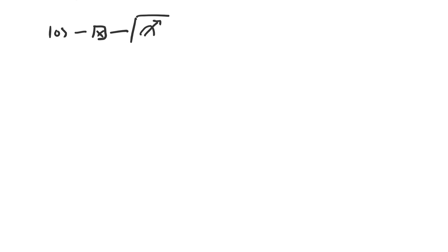We start with the qubit in the state |0⟩, it goes through a NOT gate, and then we make a measurement — denoted with a box. This measurement is guaranteed to find the qubit in the state |1⟩, because the qubit started in the state |0⟩, the NOT gate turned it into |1⟩, and since the amplitude of the state |1⟩ is 1, the probability of measuring the qubit to be in the state |1⟩ is also 1.